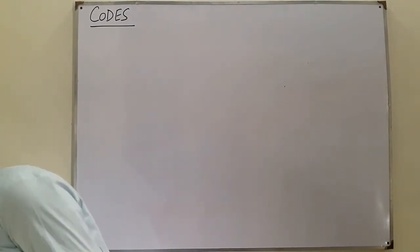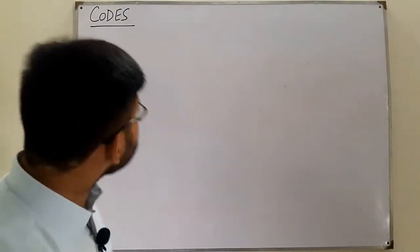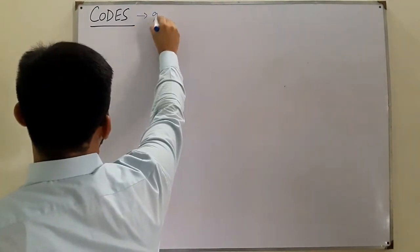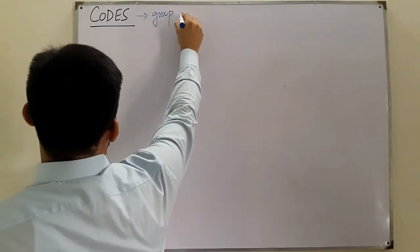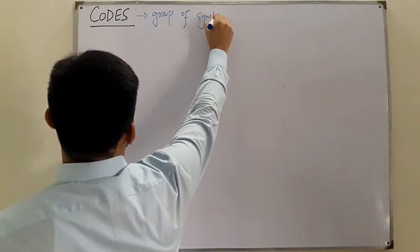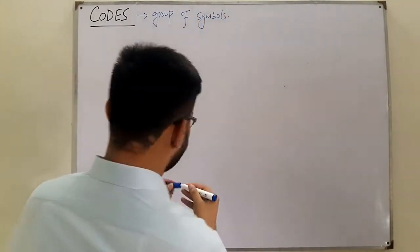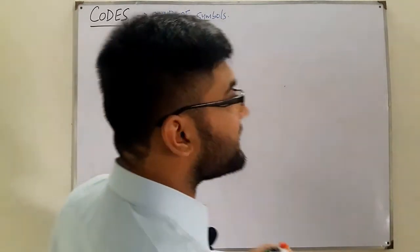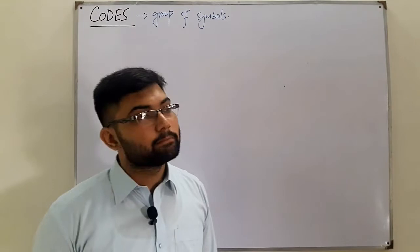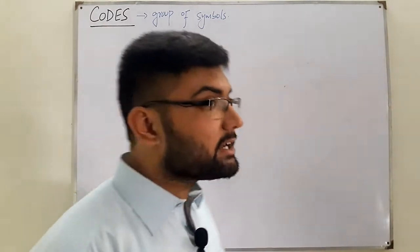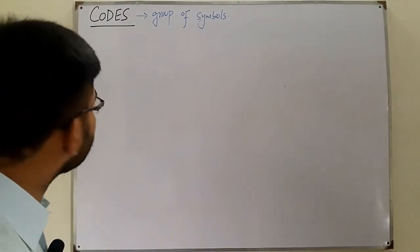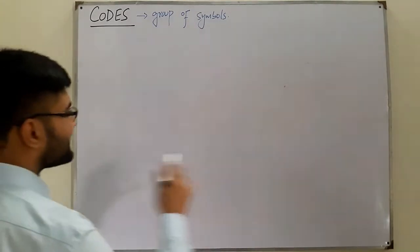So a code is a group of symbols. These symbols could be anything to represent anything. We have certain categories of these codes — we have different types of codes, and we'll be discussing most of them.